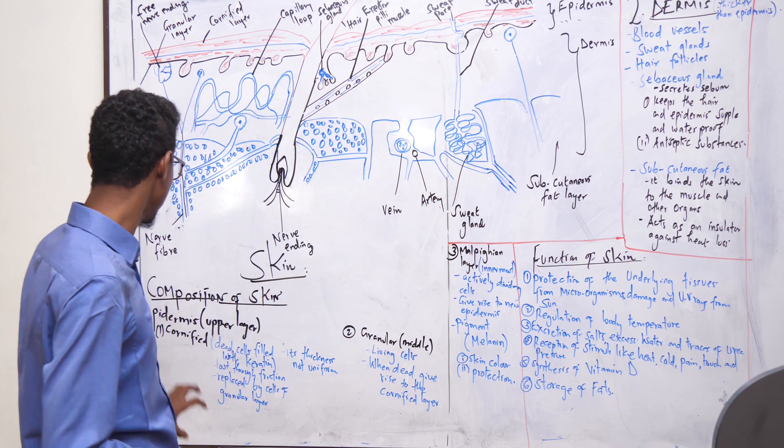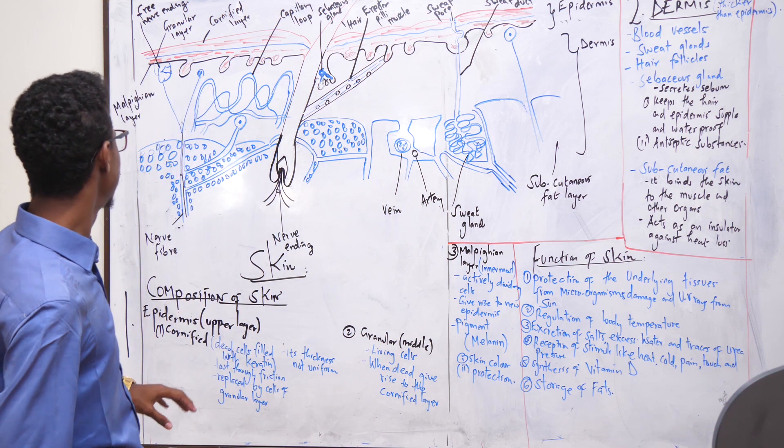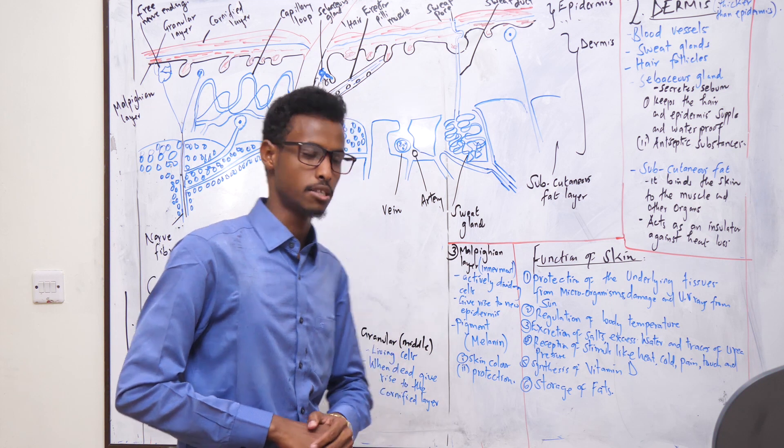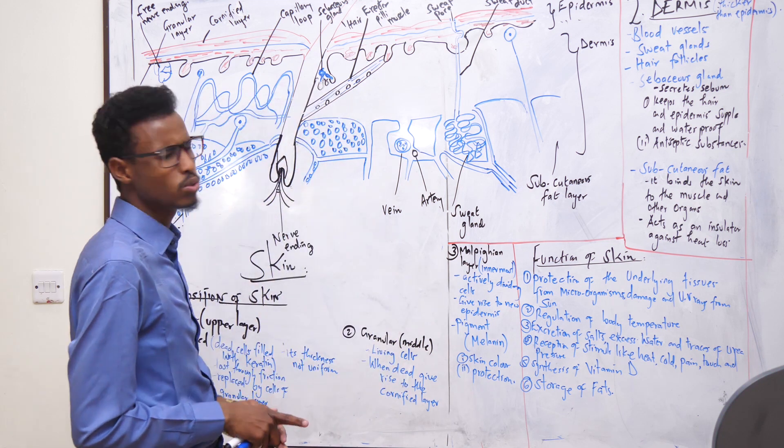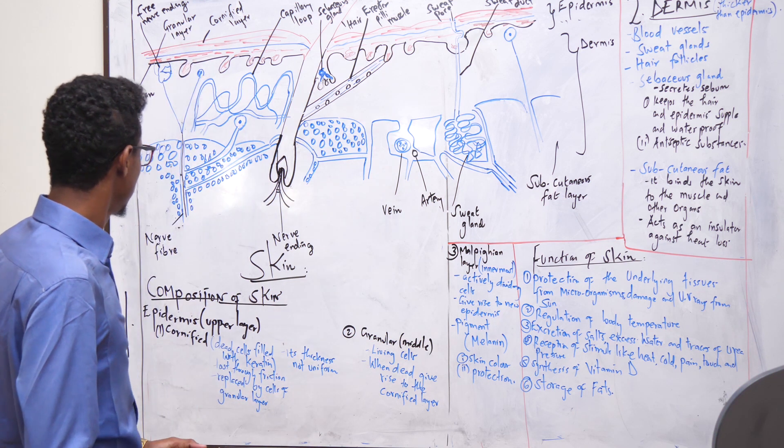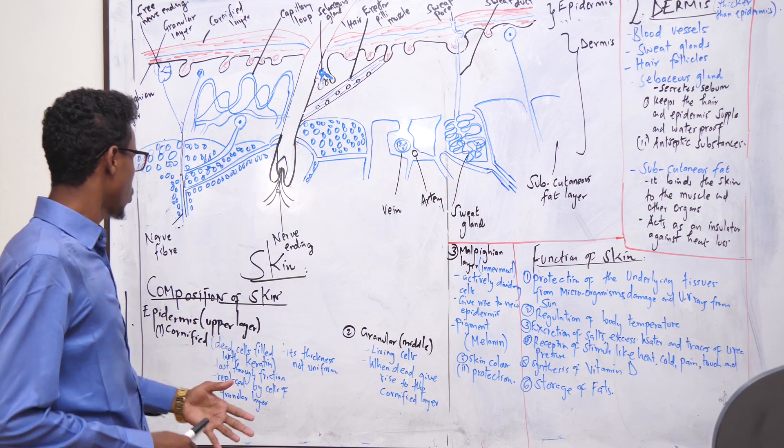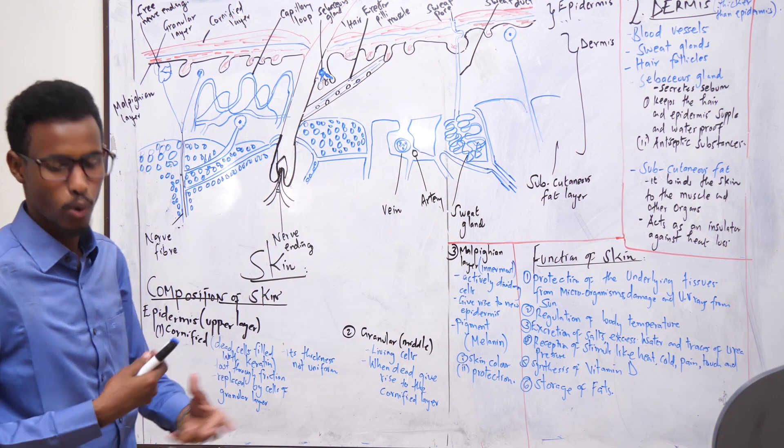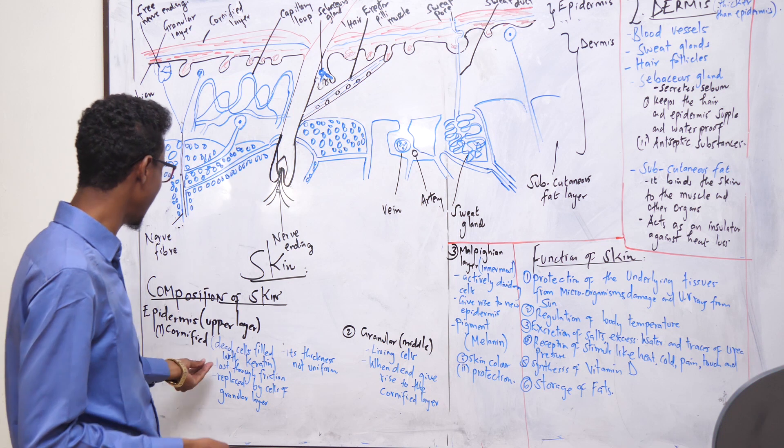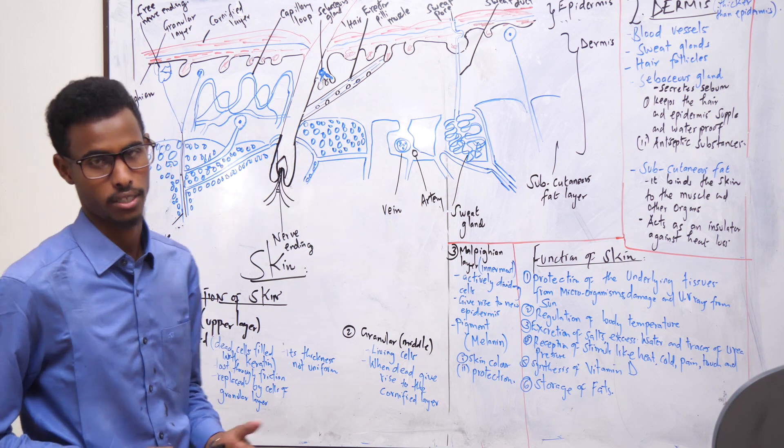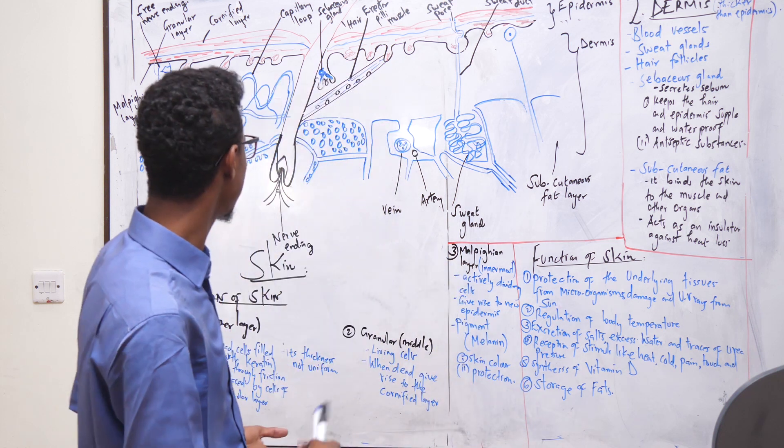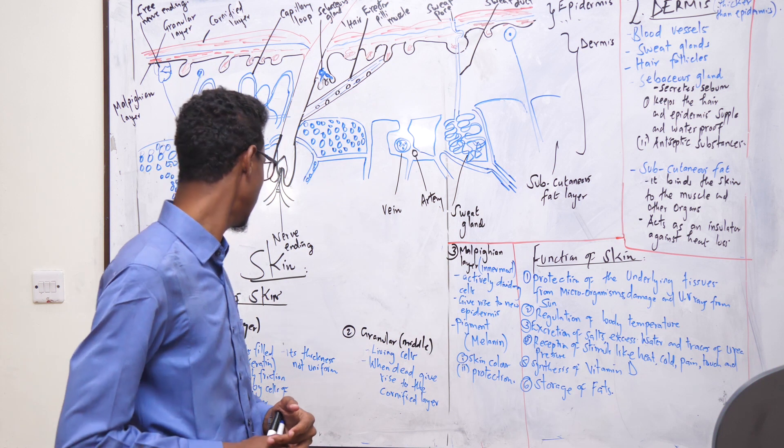The cornified layer is made up of flattened dead cells which are filled with a tough, flexible substance called keratin. What are some of the ways through which the cells of the cornified layer are lost? The cells are lost through friction. When these cells are lost through friction, they are replaced by the dead cells of the granular layer.